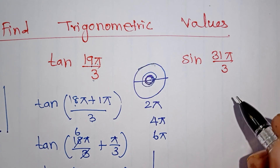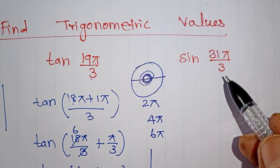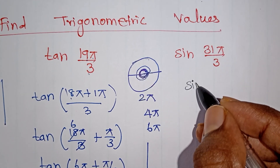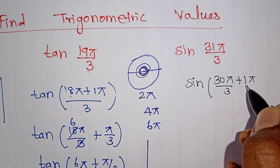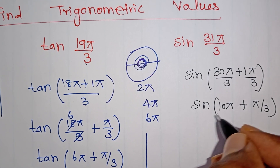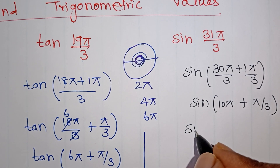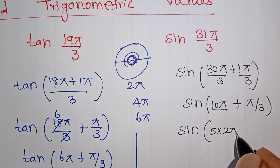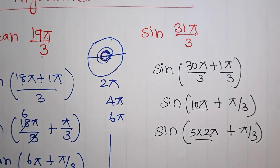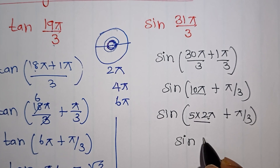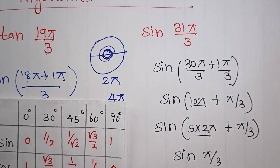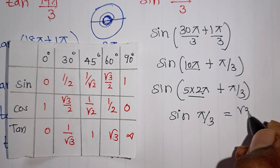Now check another question. Sin of 31 pi by 3. The denominator is 3. Split: 30 pi by 3 plus pi by 3. So 10 pi plus pi by 3. Now 10 pi is a complete angle — it equals 5 times 2 pi, which is 5 complete circles. So the remaining angle is sin of pi by 3. Pi by 3 is 180 by 3 which is 60 degrees. Sin 60 degrees table value is root 3 by 2. So the answer is root 3 by 2.